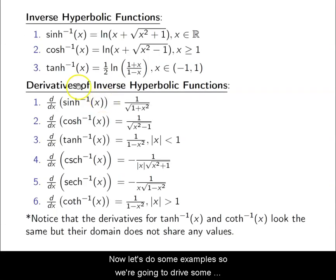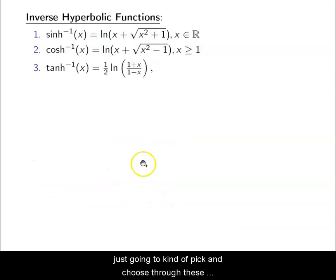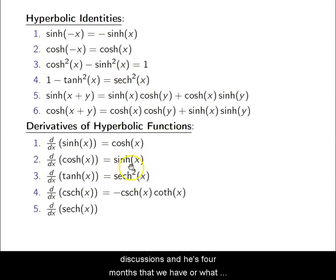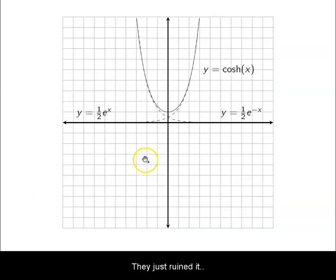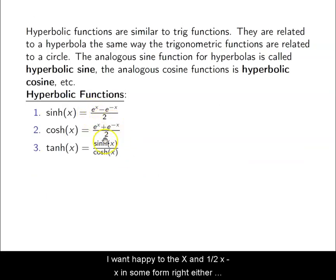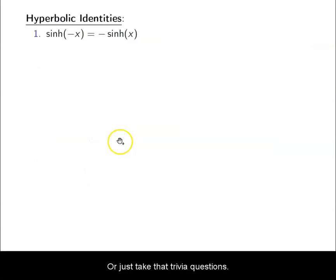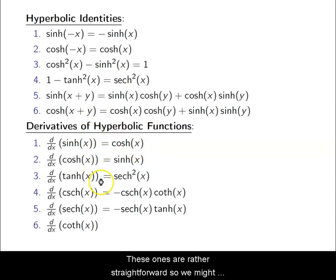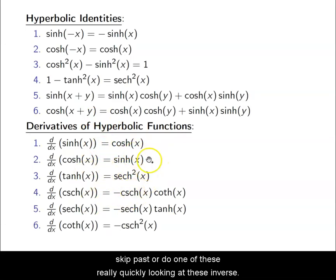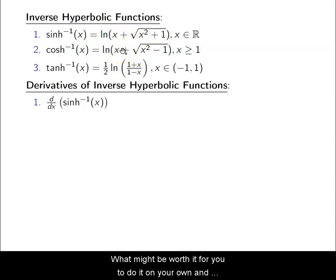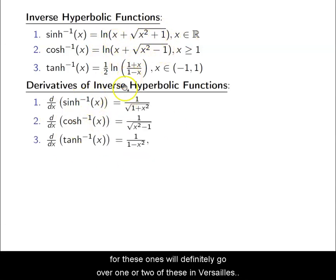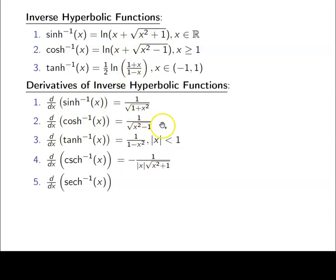Now let's do some examples. We'll derive some of these things and do some derivatives, picking through the formulas. The basic hyperbolic derivatives are fairly straightforward — they're just derivatives of one half e to the x and one half e to the negative x in some form. We'll go over at least one or two inverse hyperbolic derivatives.